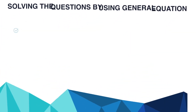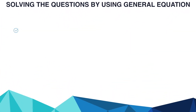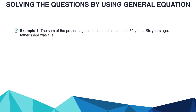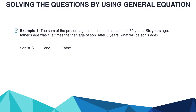Let's solve one example using the general equation. Example 1: The sum of the present ages of a son and his father is 60 years. 6 years ago, father's age was 5 times the age of the son. After 6 years, what will be the son's age? We represent son as S and father as F. So S plus F equals 60, which is equation 1.